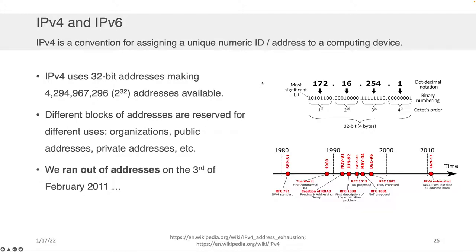Up till now, when I mentioned IP, I have been speaking about IP version 4, which uses a 32-bit address, making something on the order of 4 billion addresses available. If you look here on the right-hand side, 2 to the 32 gives you a maximum of about 4 billion.